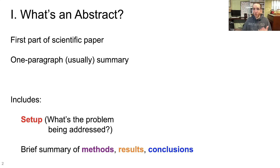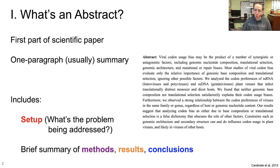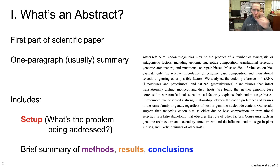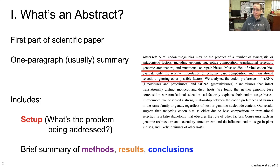To illustrate how this structure works, I'm going to show you the abstract of a paper I published back in 2013. The actual science going on here doesn't really matter for our purposes — this was about viral codon bias. The point is I'm going to use this paragraph to illustrate how abstracts work. We're going to start with the setup, which I'll highlight in red. So: 'Viral codon usage bias may be the product of a number of synergistic or antagonistic factors, including genomic nucleotide composition, translational selection, genomic architecture, and mutational or repair biases. Most studies of viral codon bias evaluate only the relative importance of genomic base composition and translational selection, ignoring other possible factors.'